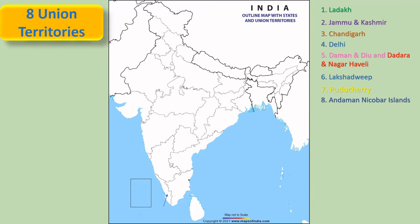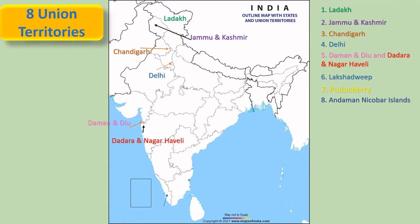Let us see the names of different Union territories and their location on the India map. This is Ladakh, this is Jammu and Kashmir, this is Chandigarh, this is Delhi, this is Daman and Diu and Dadra and Nagar Haveli, this is Lakshadweep, this is Puducherry, and last is Andaman and Nicobar Island.